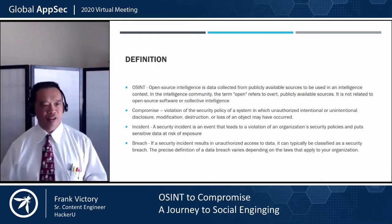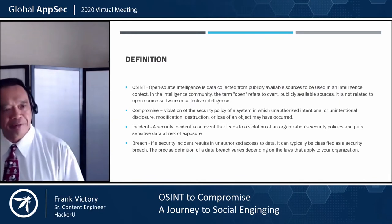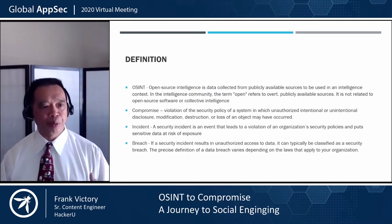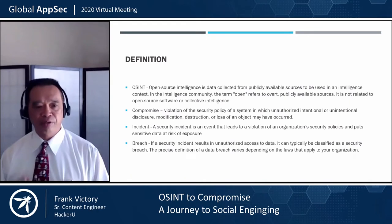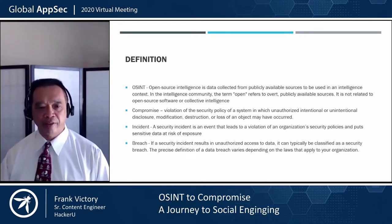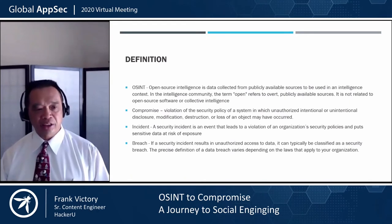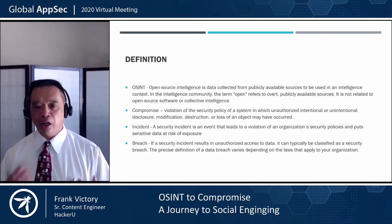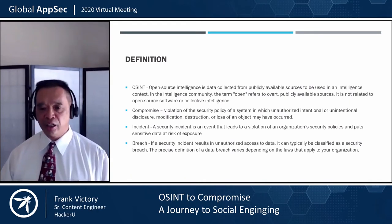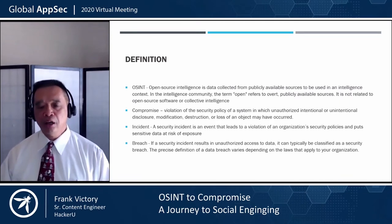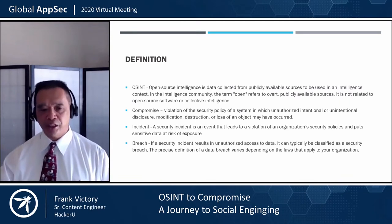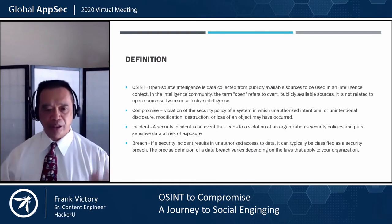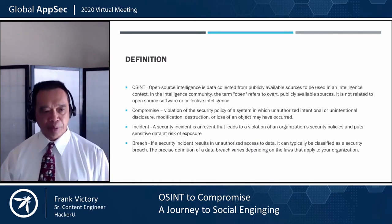Let's cover some definitions. OSINT — open source intelligence — is data collected from publicly available sources and intelligence content. We all know that there's tons and tons of information out on the internet. OSINT is the ability to go out there and grab that information and see what's publicly available.